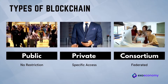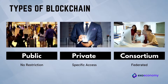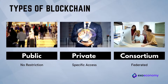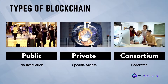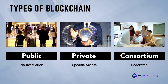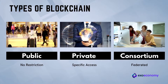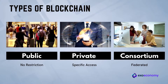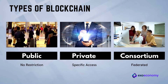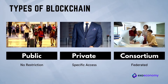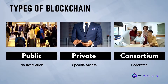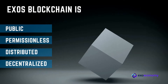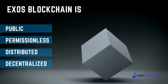Private blockchains, however, give specific permission to the individuals who are allowed to participate. A third type, consortium blockchain networks, also known as federated blockchains, have a more limited set of members and roles. Exos blockchain is a public blockchain.